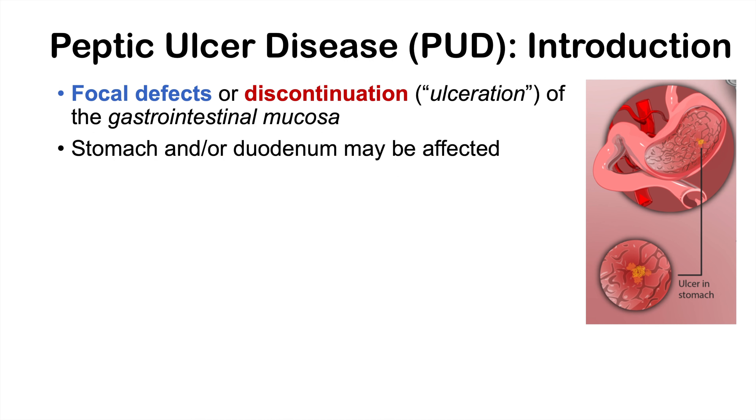The stomach and/or duodenum may be affected. If the stomach is affected, that is a gastric ulcer. If it's the duodenum that's affected, it is a duodenal ulcer.